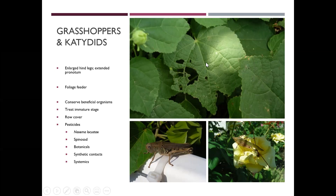When we get into the big ginormous caterpillars — think tomato hornworms or full-grown grasshoppers or katydids — they're going to eat whatever they want. They'll eat foliage, flowers, and sometimes fruit. They just kind of leave whatever they don't want behind, but they can eat anything.